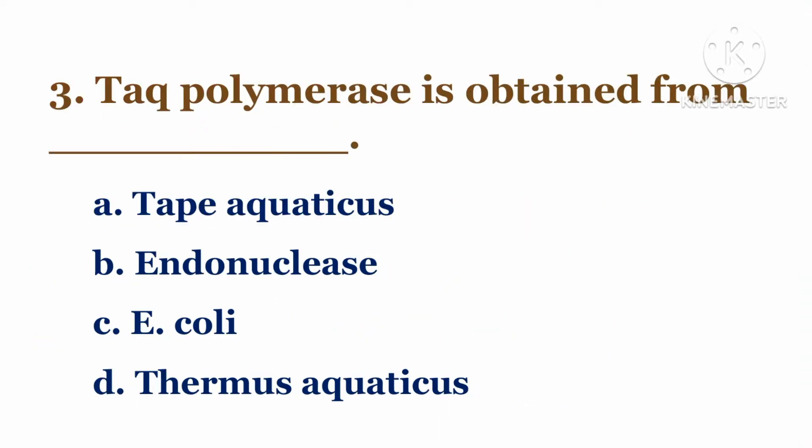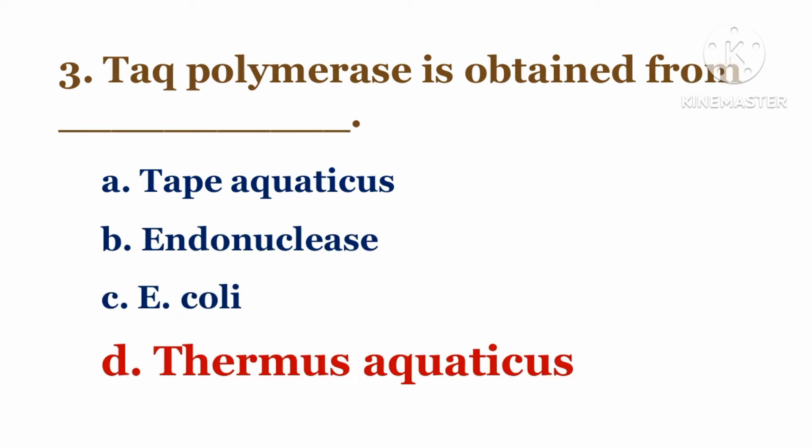Next question. Taq polymerase is obtained from DASH. Options: A. Tape aquaticus, B. Endonuclease, C. E. coli, D. Thermus aquaticus. The answer is D. Thermus aquaticus.